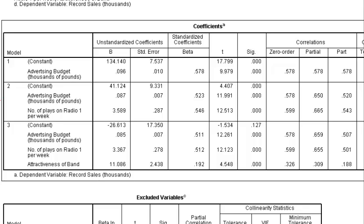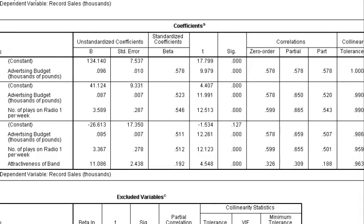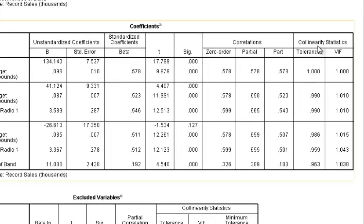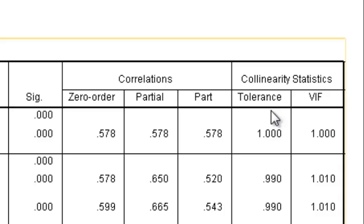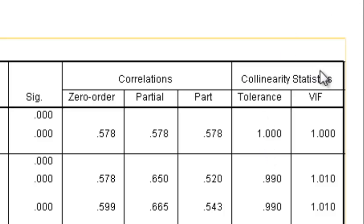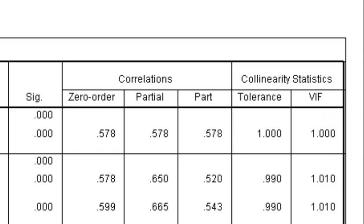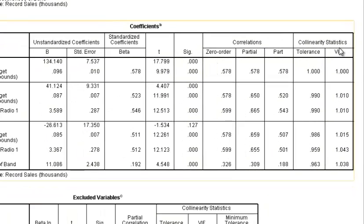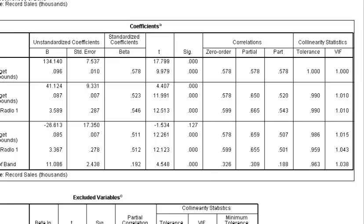The last thing to check in the coefficients table is the collinearity statistics. If the Tolerance value is less than 0.1 you violate the collinearity assumption; conversely, if the VIF is greater than 10 you have also violated it. We did not violate either. Note that tolerance and VIF are inversely proportional — if you divide the tolerance value into 1, you should get the VIF, which it does.